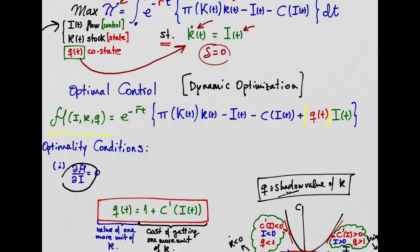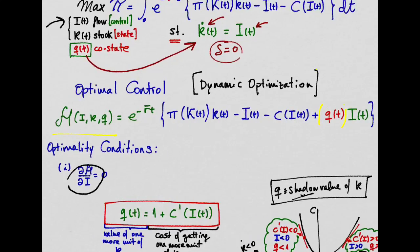Okay, so now we want to maximize the infinite sum of the future stream of cash flows of our representative firm. To do that, we have set up the present value Hamiltonian right here.